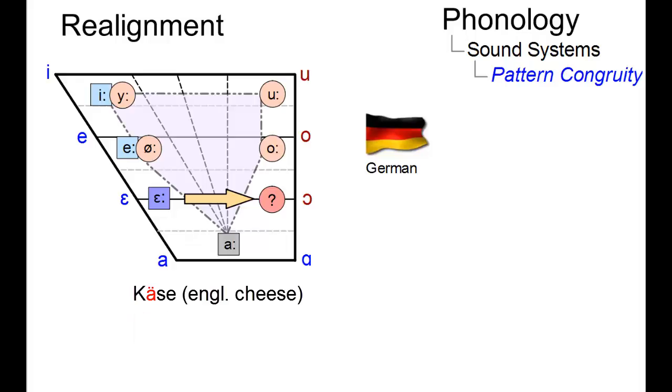However, many German speakers realign the pattern and use E instead. They say Käse.